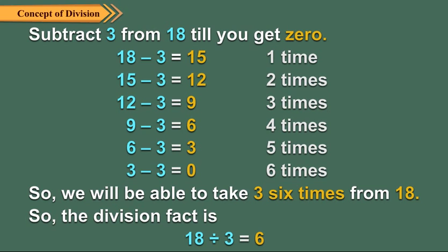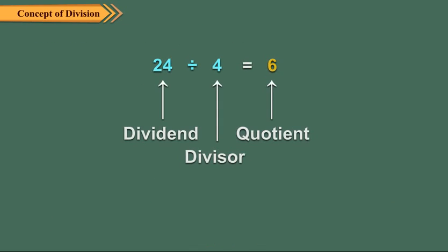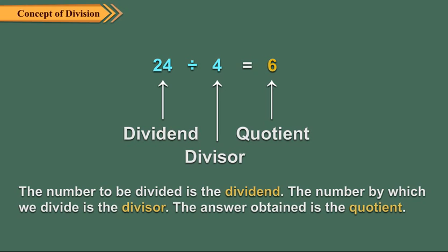Children, now you should know the terms used in a division sum. In a division, we use the terms dividend, divisor and quotient. The number to be divided is the dividend. The number by which we divide is the divisor. The answer obtained is the quotient.